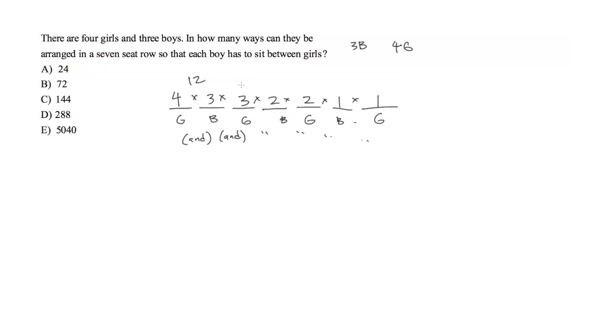This will be 12, here we get 36, 72, 144 times 1 times 1, so we get a total of 144 different ways to arrange these seven people.